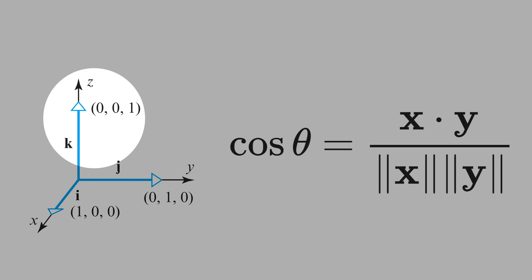See that the coordinates of the vector k is 0, 0, 1. The inner product of k and j is 0. That means they form a 90 degree angle.